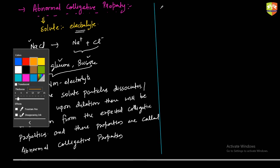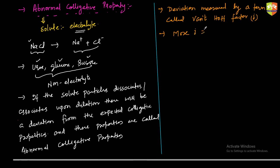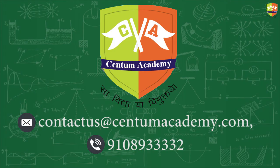This deviation is measured by a term called the van't Hoff factor, represented by i. The greater the value of i, the greater will be the deviation. Note: fructose is also a non-electrolyte.